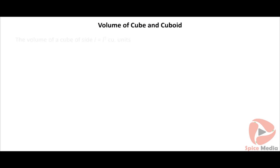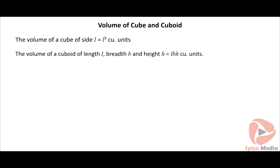Let us learn to find the volume of a cube and a cuboid. The volume of a cube of side L is equal to L³ cubic units. The volume of a cuboid of length L, breadth B, and height H is equal to L×B×H cubic units. Click on the animation button to view the derivation.